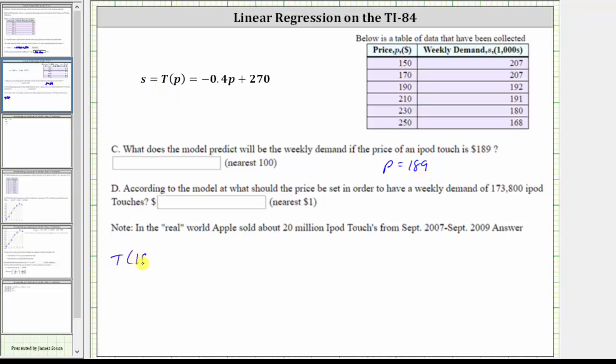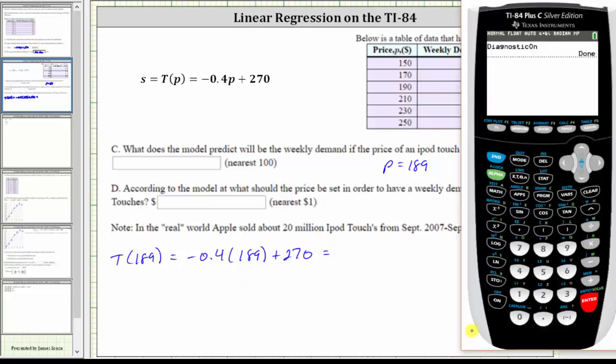So T of 189 using the model is equal to negative 0.4 times 189 plus 270. Just keep in mind, this gives us the weekly demand in thousands. So going back to the calculator, we enter negative 0.4 times 189, and then plus 270, enter, which gives us 194.4.